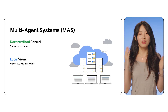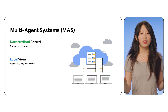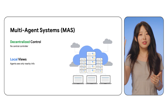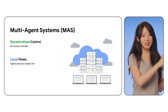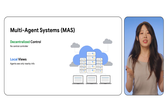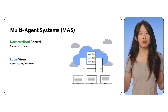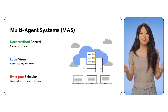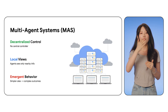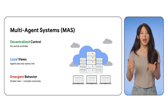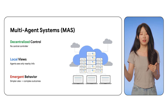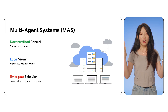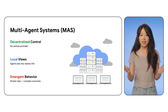The second point is local view. Each agent only knows what's around it, but not the whole system. Imagine yourself standing in a crowded stadium — you can only see and react to the people nearby, but not the entire crowd. And lastly is emerging behavior. This is where the magic happens. From those single local rules, amazing global patterns emerge, and agents work together to solve a complex problem that no single agent can solve easily.